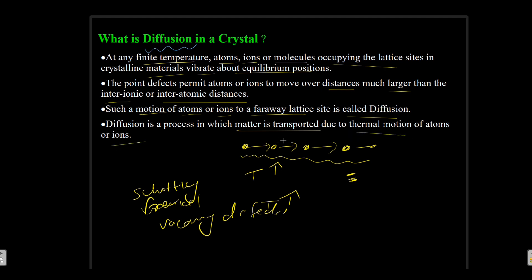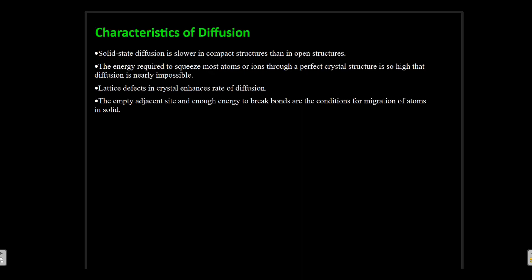So in a crystal, diffusion is a process in which matter or atoms or ions migrate due to thermal motion of atoms or ions. Now, there are certain characteristics of diffusion.